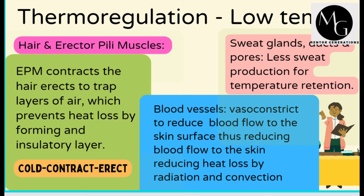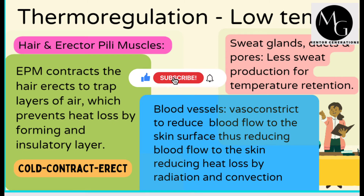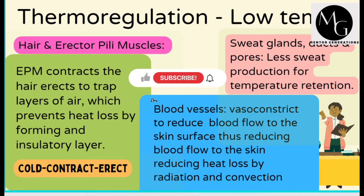On the other hand, in thermoregulation when temperature is low, the hair and erector pili muscle come into action: the erector pili muscle contracts, and the hair erects to trap layers of air, which prevents heat loss by forming an insulatory layer. Remember, hair is a bad conductor of heat, so it retains heat on the body surface. I coined the phrase 'cold, contract, erect' to help you remember — 'contract' is the action of the erector pili muscle, and 'erect' is the action of the hair.